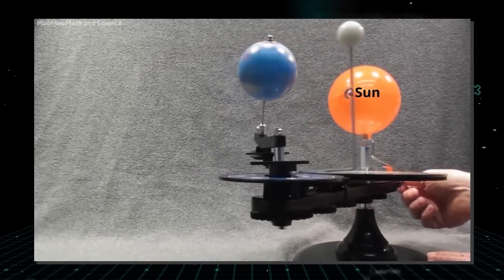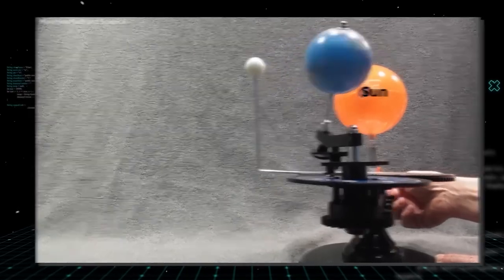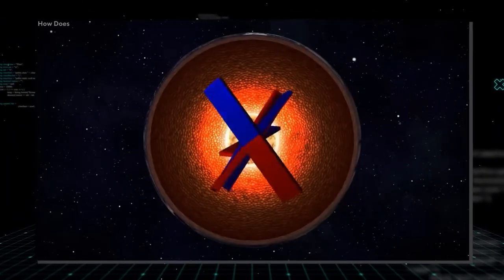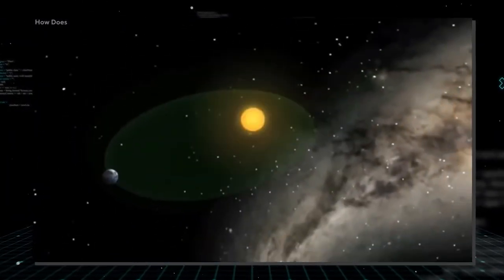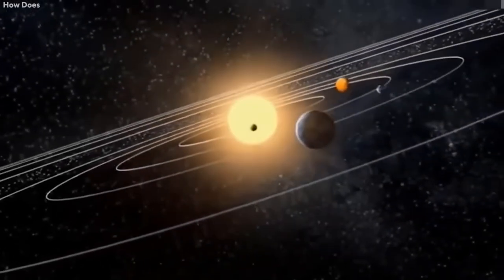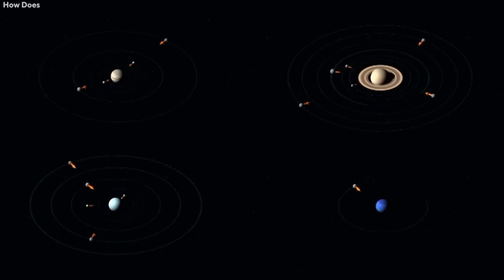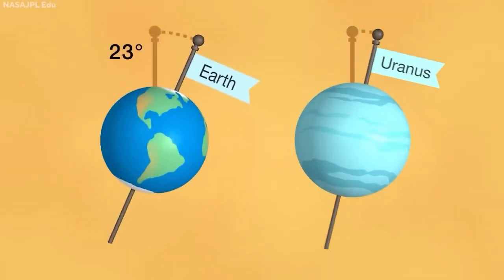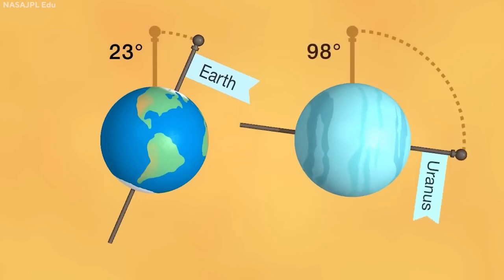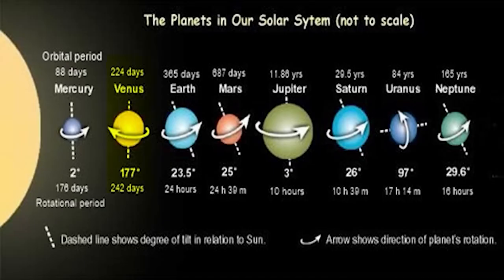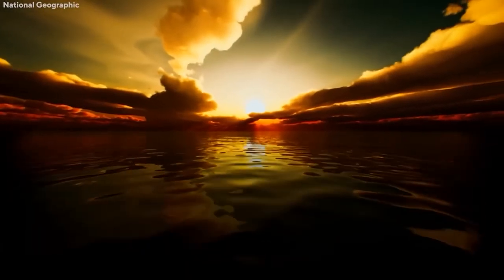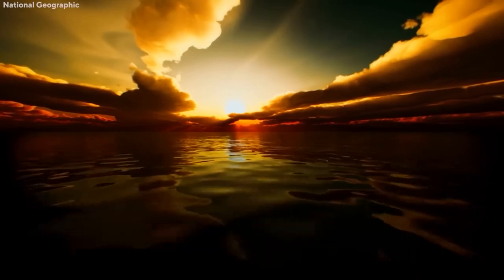Earth's tilted axis always points in the same direction as it orbits the sun, so different parts of the Earth receive direct sunlight throughout the year. Other planets in our solar system tilt to varying degrees as well. Uranus has extreme seasons and rotates almost sideways at 97 degrees. Venus has an axial tilt of 177.3 degrees and as a result has only a few seasons.